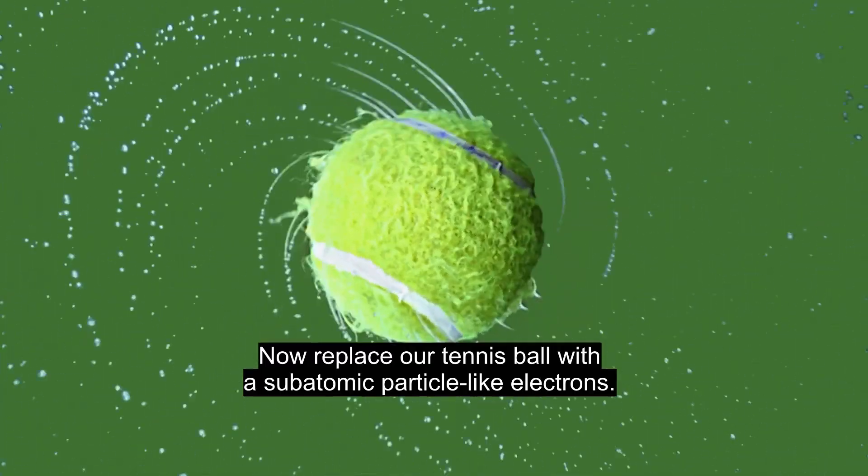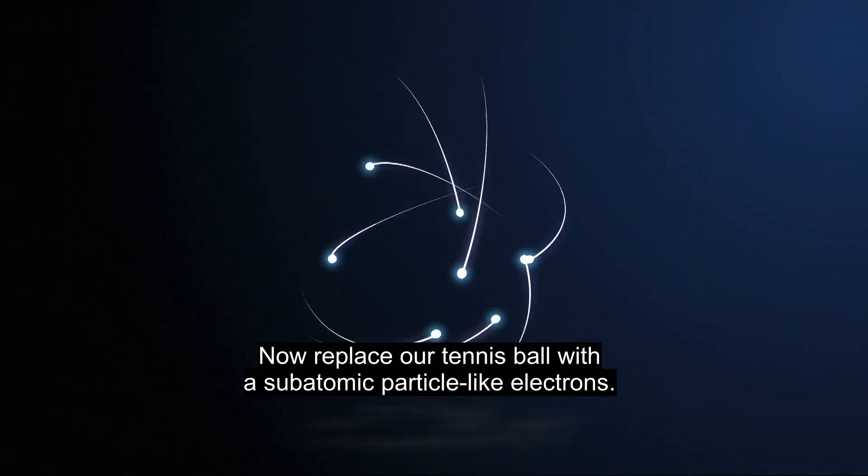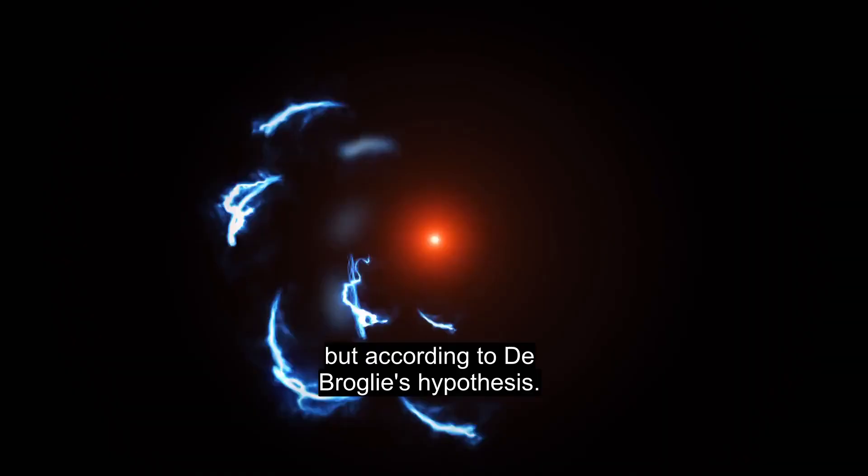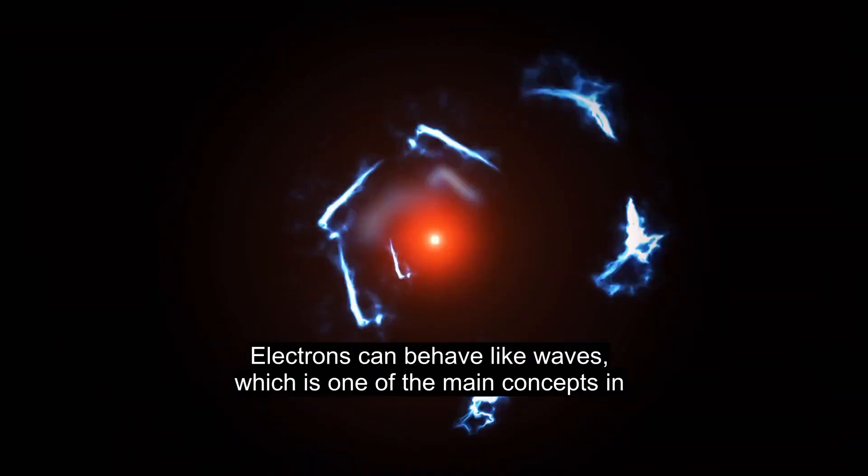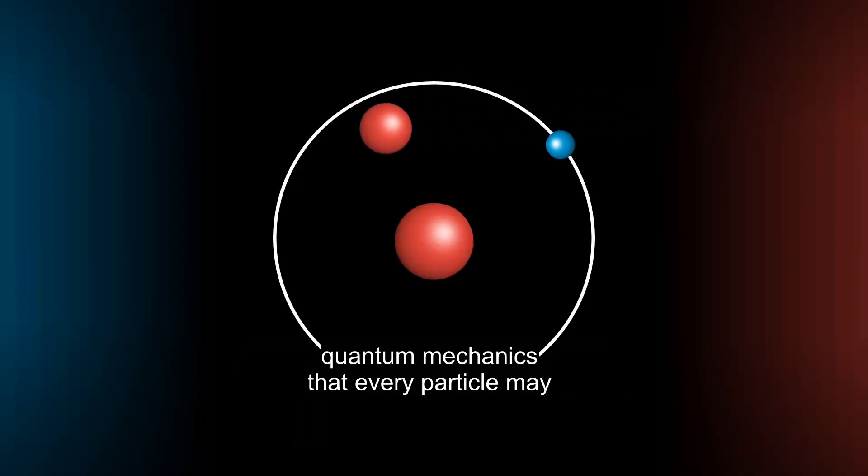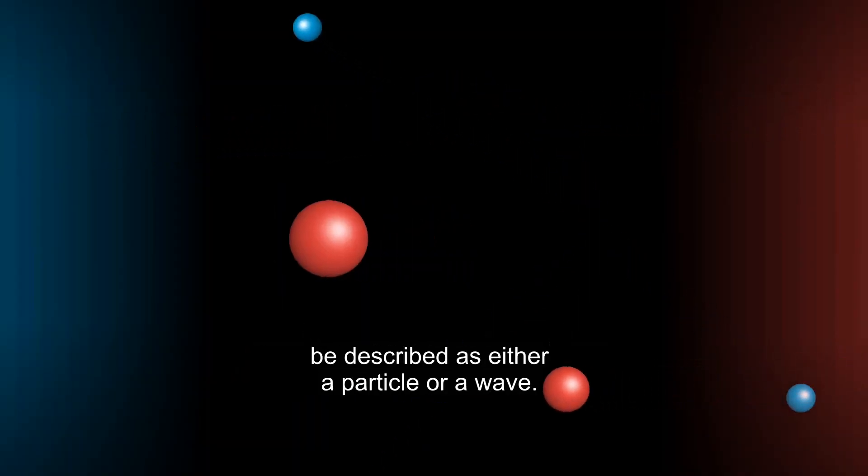Now, replace our tennis ball with a subatomic particle like electrons. Electrons have definite mass, position, and velocity, but according to de Broglie's hypothesis, electrons can behave like waves, which is one of the main concepts in quantum mechanics that every particle may be described as either a particle or a wave.